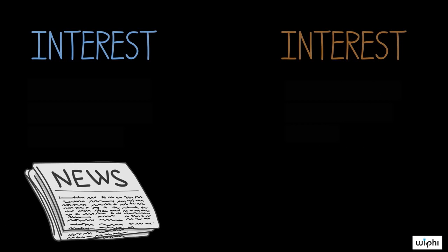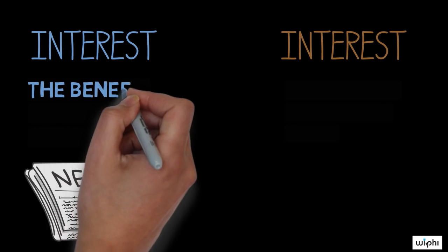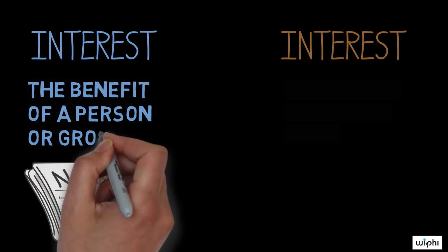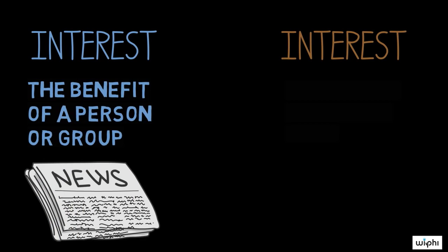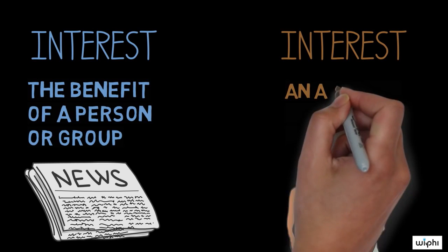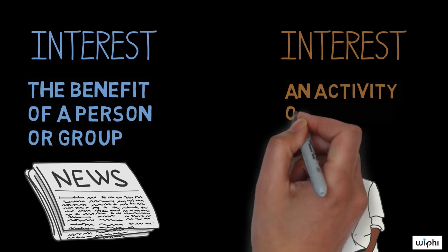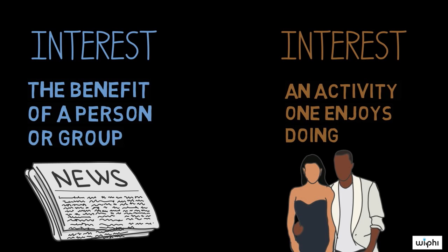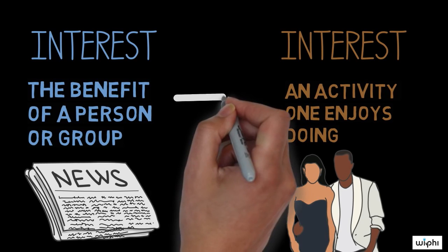In the first premise, "interest" is used to mean the benefit of a person or group, like in the sentence, "It is in your interest to keep your bank account information private." In the second premise, "interest" is used to mean an activity one enjoys doing, like in the sentence, "My interests are swimming, hiking, and reading."